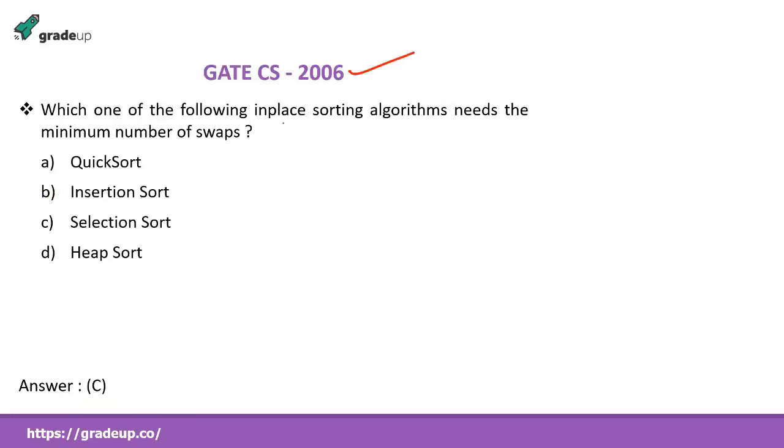Gate CS 2006. Which one of the following sorting algorithms, in place sorting algorithms need minimum number of swaps. Minimum number. You know. Selection sort requires minimum number. Why? In best case. And in worst case. Two cases were there in selection sort. Two cases were there. In worst case also. It requires order of n swaps. In worst case. Because it doesn't swap always. It swaps only one by one. N times. So that's why selection sort is the answer. Why do I take best case? In worst case it is taking order of n. Why do I focus on best case? Answer is selection sort.